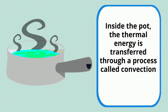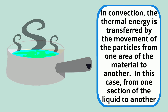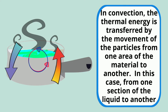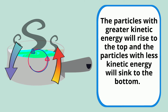Inside the pot, the thermal energy is transferred through a process called convection. In convection, the thermal energy is transferred by the movement of the particles from one area of the material to another — in this case, from one section of the liquid to another. The particles with the greater kinetic energy will rise to the top, and the particles with less kinetic energy will sink to the bottom.